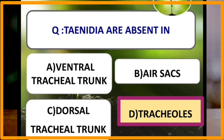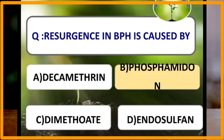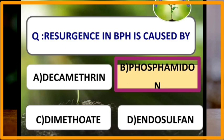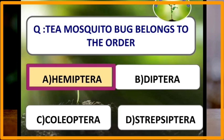Taenidia are the spiral thickenings which give support to the trachea without it collapsing when there is no air. Economic threshold level is significantly low in vectors. Resurgence in brown planthopper is caused by phosphamidon. Tea mosquito bug belongs to the order Hemiptera.